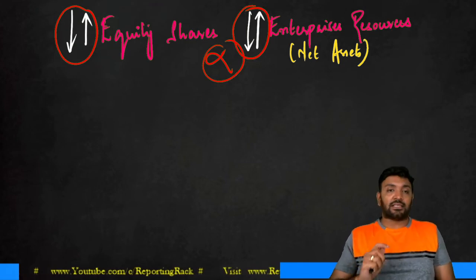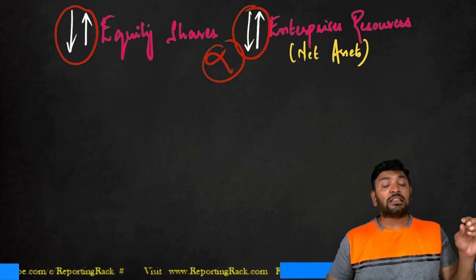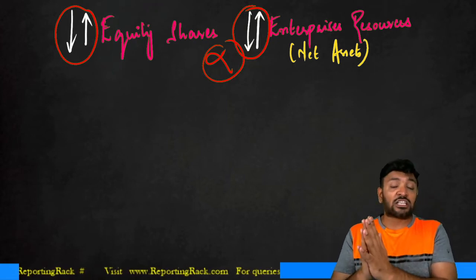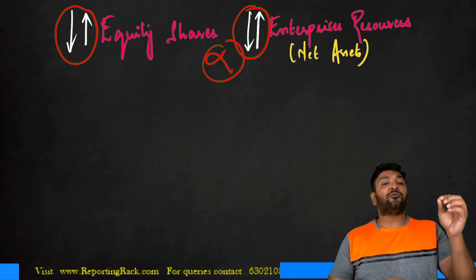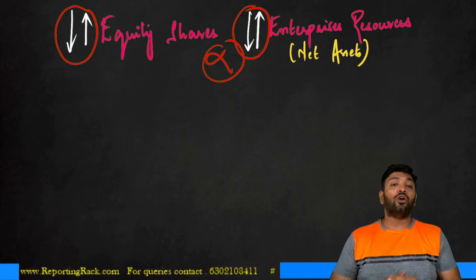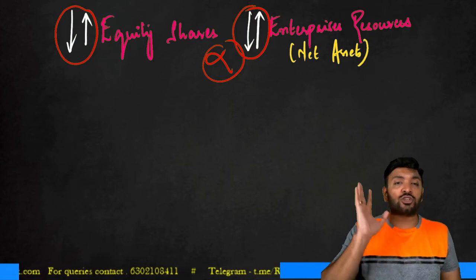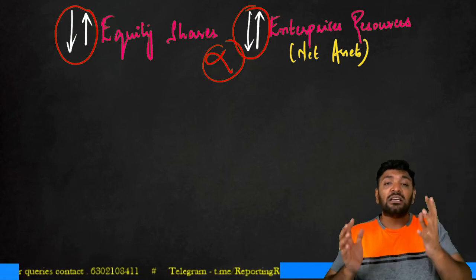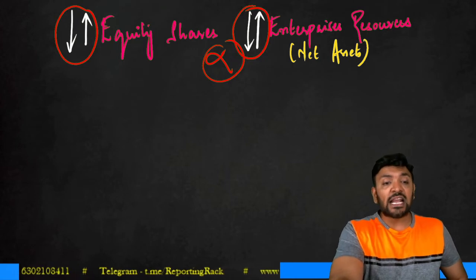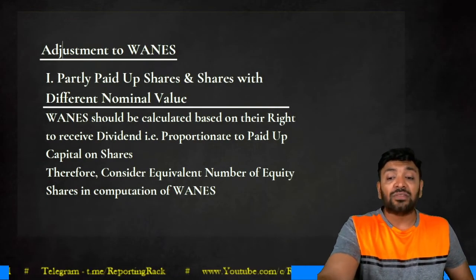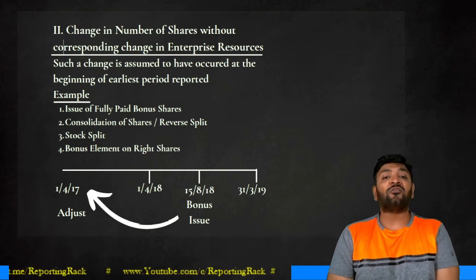However, sometimes there is a change in number of shares without a corresponding change in enterprise resources. For example, a stock split — for one ₹10 share, the company issues two ₹5 shares, total shares double but net assets don't change. Or bonus shares issued — reserves are capitalized, net assets remain the same, number of equity shares increases. Whenever this occurs, we assume the change occurred at the beginning of the earliest period reported.